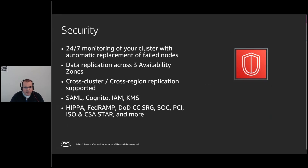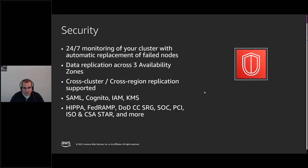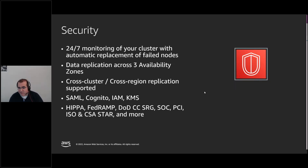Amazon OpenSearch Service actively monitors your clusters. It provides automatic replacement of failed nodes, so you don't incur the operational cost of replacing them. Importantly, it supports data replication across three availability zones. You also get cross-cluster, cross-region replication for active-passive setups — customers have passive replicas in different continents, providing high availability and a much faster experience for end users.